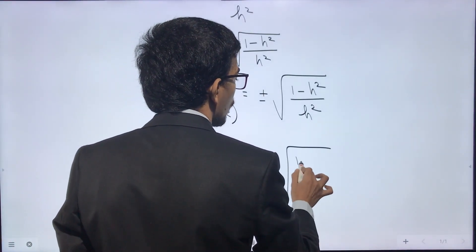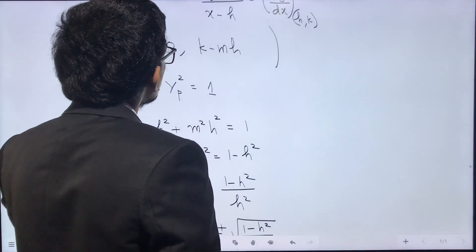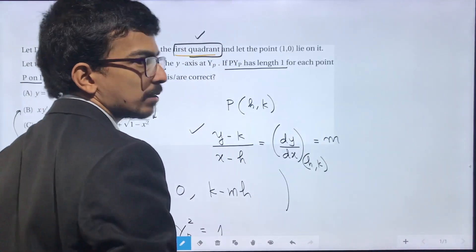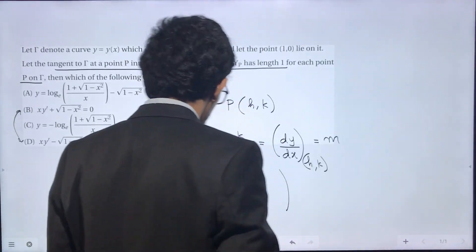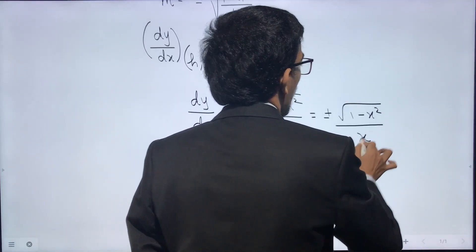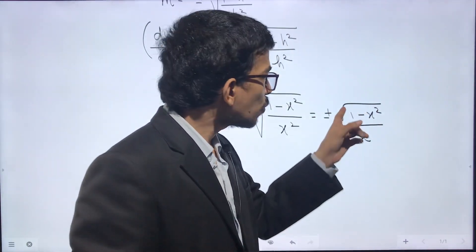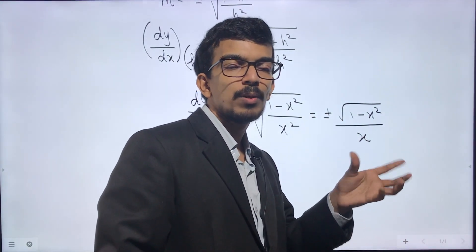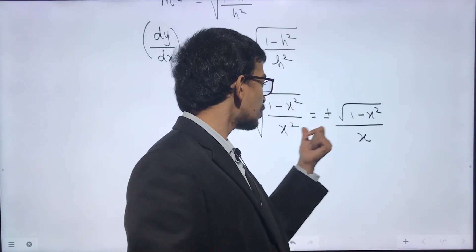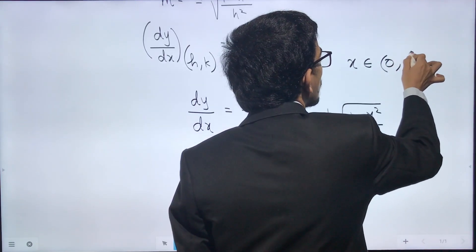The curve is entirely in the first quadrant, so x is positive. Also, the quantity inside the square root must be positive, so 1 − x² > 0, meaning x < 1. Combined with x > 0, we have x ∈ (0, 1). So dy/dx = ±√(1 − x²)/x, with the domain clearly between 0 and 1.